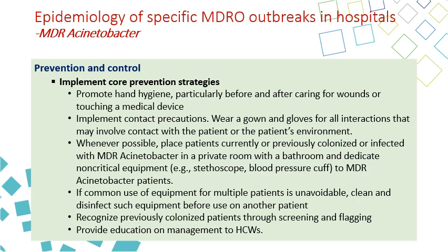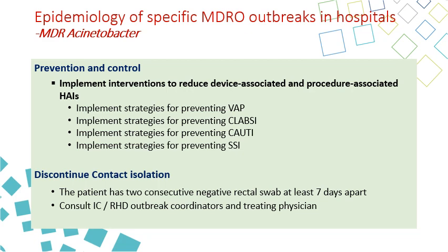Prevention of MDR Acinetobacter includes contact transmission measures: hand hygiene, contact precautions, private room with private bathroom, and dedicated non-critical equipment. If common-use equipment is unavoidable, clean and disinfect between patients. Recognize previously colonized patients by flagging in the system and provide education for healthcare workers. Preventive bundles for VAP, CLABSI, and SSI also apply. Contact isolation can be discontinued when two consecutive negative rectal swabs are obtained seven days apart.